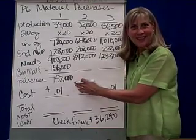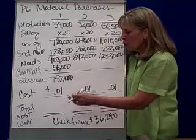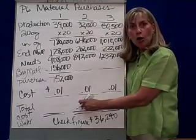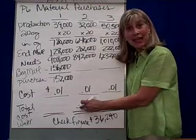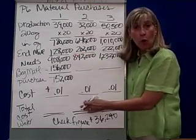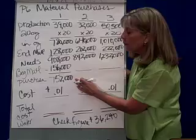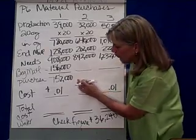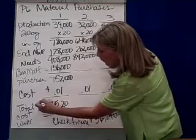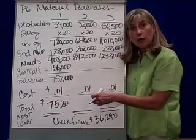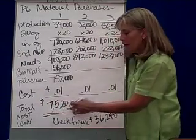How much does an ounce of water cost? It costs a penny. So when I'm budgeting for my water in the first quarter, how much money do you need to set aside? A penny times 752,000 is $7,520. So your budget for water in the first quarter will be $7,520.